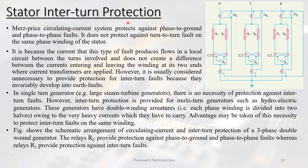Next is stator inter-turn protection using the mass-price circulating current system. This scheme provides protection against phase-to-ground faults, phase-to-phase faults, and turn-to-turn faults external to the alternator in the same phase. For example, in the R phase with double winding, a turn-to-turn fault creates a closed local circuit between the turns involved and does not create a difference between the current entering and leaving the winding at its ends, even when current transformers are applied.